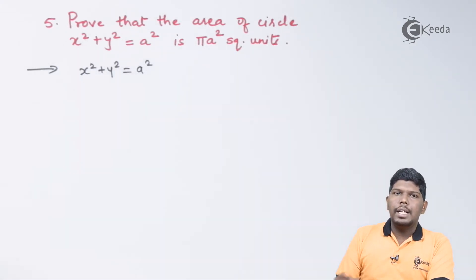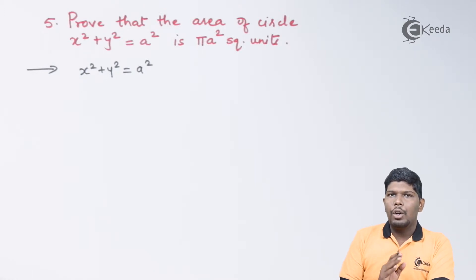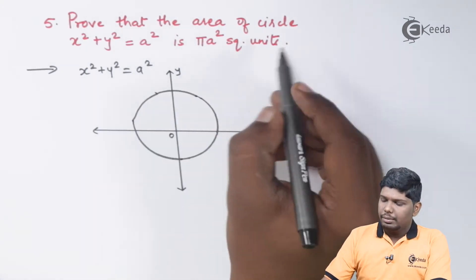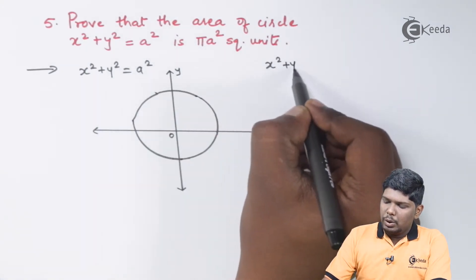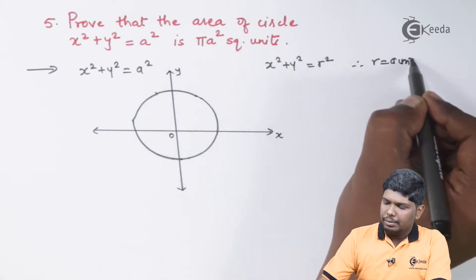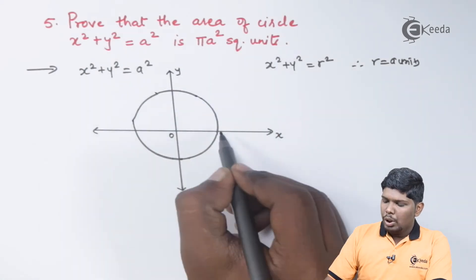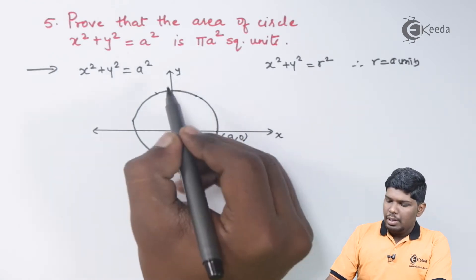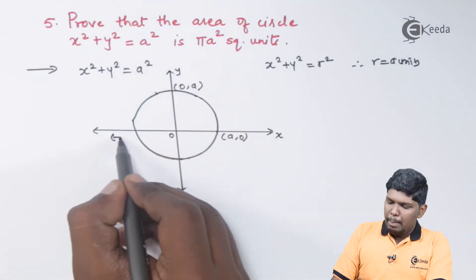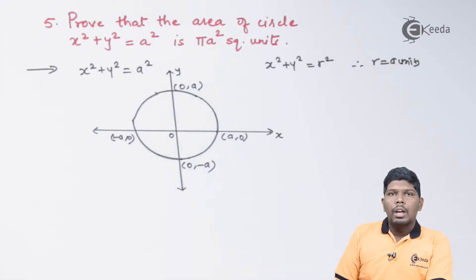The equation of circle is x² + y² = a², so on the right-hand side we have a², meaning the value of radius will be a — just take the square root of the right-hand side. Comparing with x² + y² = r², the radius is a units. Therefore, the coordinates will be (a, 0), (0, a), (−a, 0), and (0, −a).